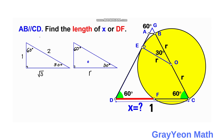Recalling the 30-60-90 ratio: the shorter leg opposite 30° is 1, the longer leg is √3, and the hypotenuse is 2. In our case, with R as the longer leg, we divide R by √3 to get R/√3 for the shorter leg, and the hypotenuse is 2R/√3. Applying this back to our figure: the length GE equals R/√3, and the full length from G along that line is 2R/√3.